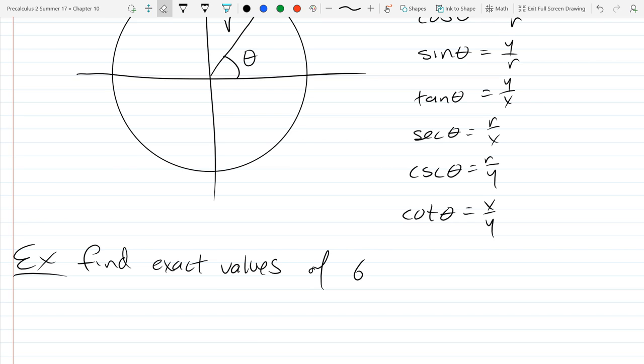We'll find the values of the three trig functions of theta, where (4, -3) is the point on the terminal side.